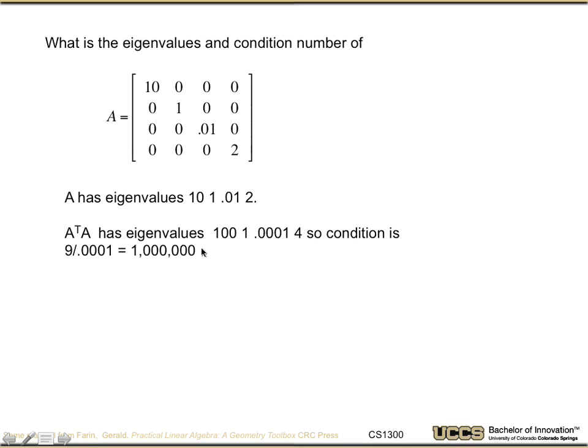The A transpose A has the eigenvalues of 100, 1, 0.0001, and 4, so the condition number should be 10 divided by 0.0001, which gives us around a million. So in this case, we've lost six decimal digits.